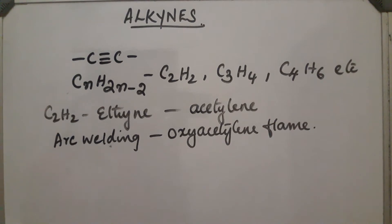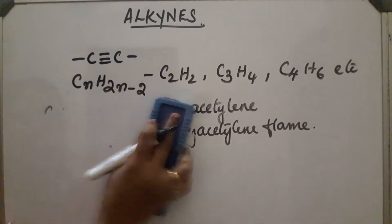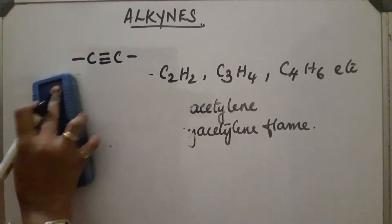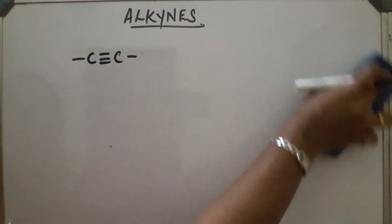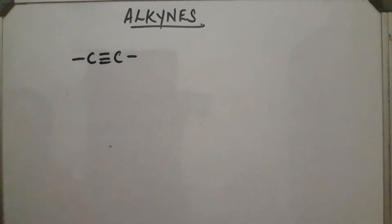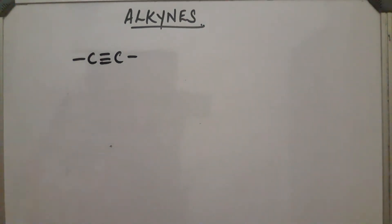Now, what about the nomenclature of alkynes, or naming? We can write using the IUPAC naming system and the common system of naming. In the case of the common system of naming, the first member C₂H₂ is acetylene, and other compounds are written as derivatives of acetylene.